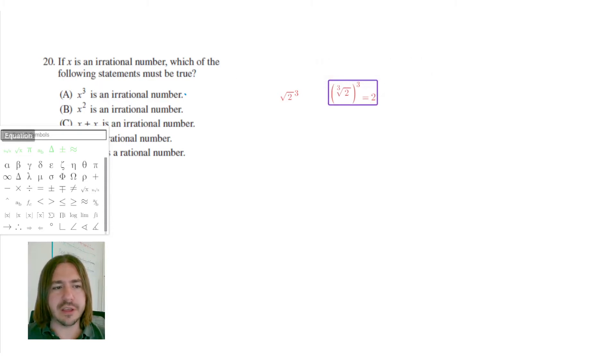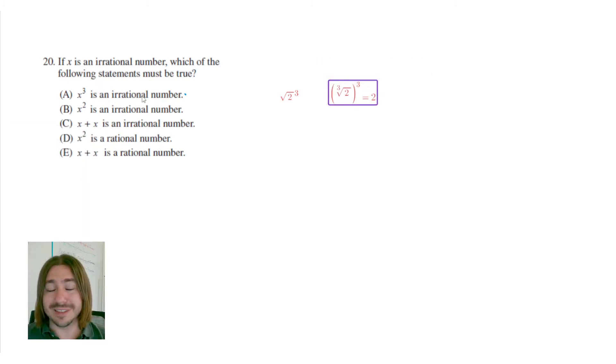So, although some irrational numbers are still irrational when you cube them like root 2, some of them are not. If I cube the cube root of 2, I get a rational number. So A does not have to be true, it's only true sometimes.